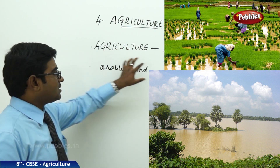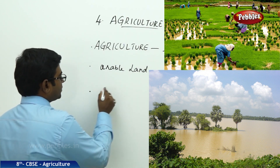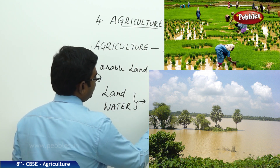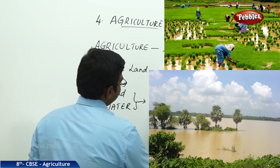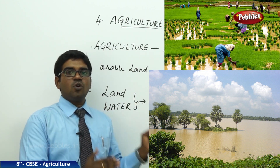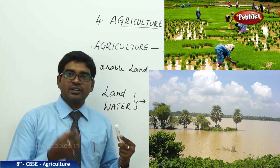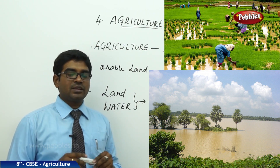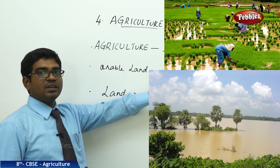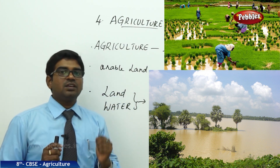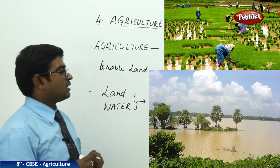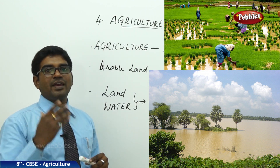Agriculture needs the support of land and climate — combined, we call them climate and topography. The climate and topography of a region should support farmers to do agriculture. The fertility of the soil should be good and water availability should be there. The land conditions that favor a farmer to do cultivation is called arable land — spelled A-R-A-B-L-E. Land which does not support agriculture is known as wasteland.